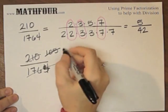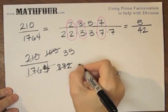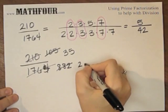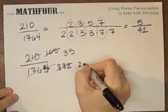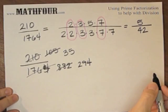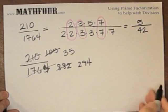3 goes into 105, 35 times and 3 goes into 882, 294 and so on. And then we need a 7. This would become a real mess.